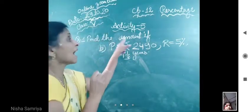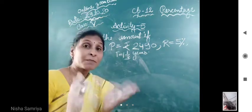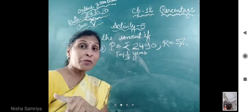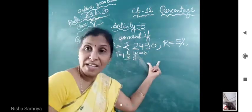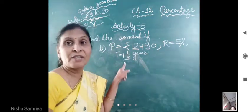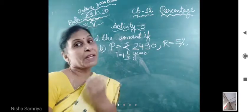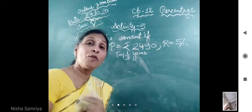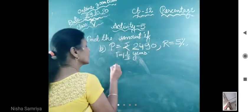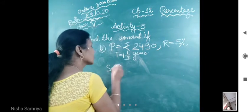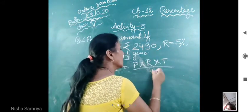Ab isko kya karenge ham? Amount nikalna hai. Lekin hamare paas amount nikalne se pehle hume kya find out karena padega? Simple interest. Kyuki hume P given hai, R given hai, T given hai. Toh hume kya find out karena padega? Interest. Kyuki amount ke liye hume interest ki zarurat padegi. Without interest, how we calculate that amount? Clear? So first we write, simple interest is equals to P into R into T upon 100.